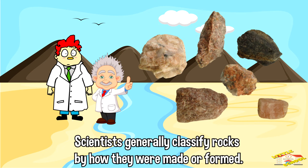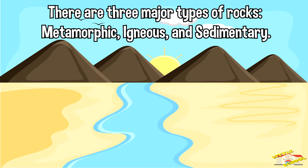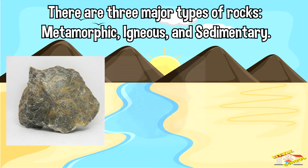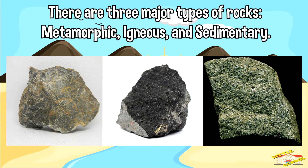Scientists generally classify rocks by how they are made or formed. There are three major types of rocks: metamorphic, igneous, and sedimentary.